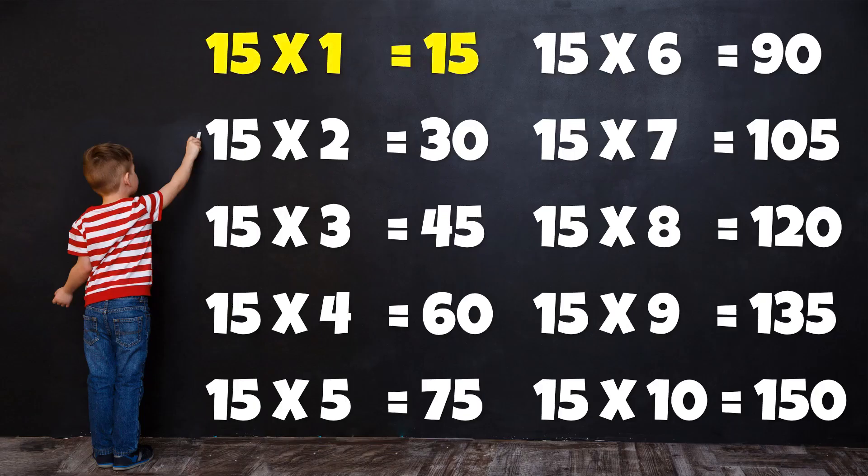Table of 15: 15 1s are 15, 15 2s are 30, 15 3s are 45.